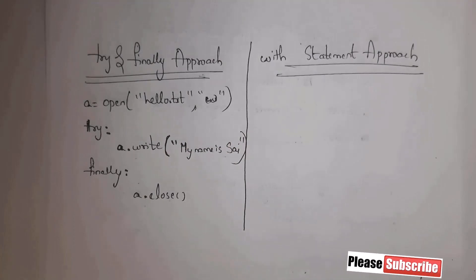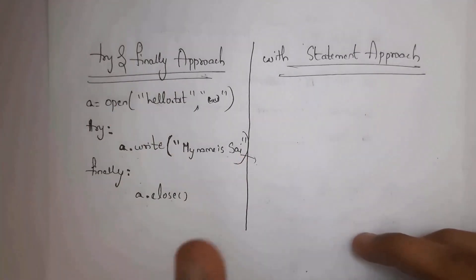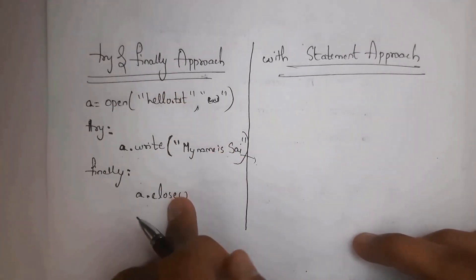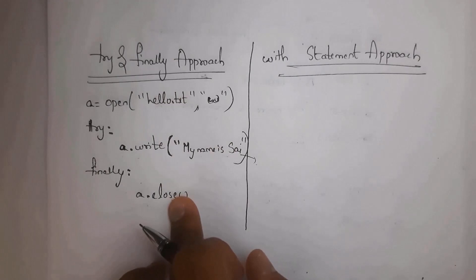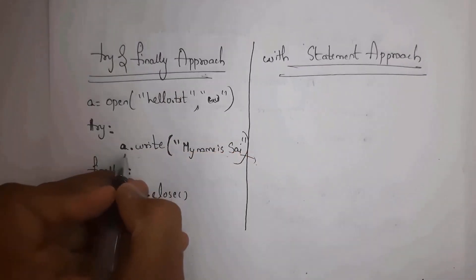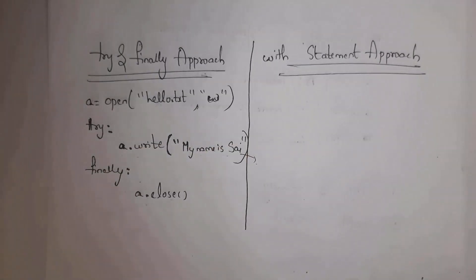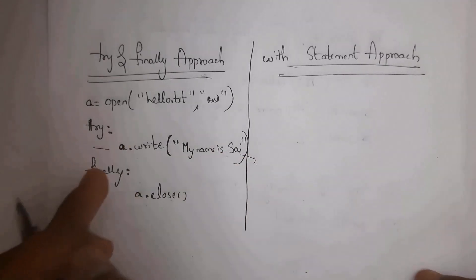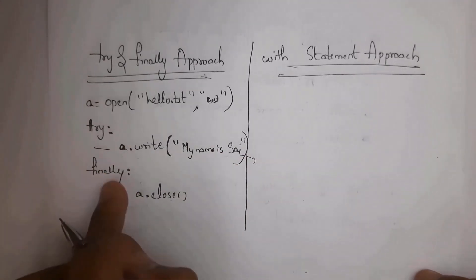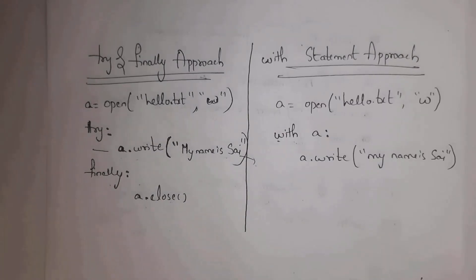If there is no exception, it will successfully execute the code in the try block and close the file — adding 'my name is saai' to hello.txt and then closing it. If there is an exception while writing, even so, the finally block will successfully close the file. This is the use of the try/finally approach.